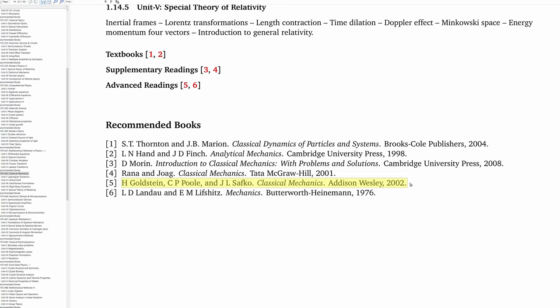Start reading Thornton and Marion. Once you are comfortable with concepts and the basics, you can then open the Goldstein book. The third book is also a very good book written with considerable explanation, easily approachable for new master's students, whereas the Goldstein book is a little difficult and requires more experience in mechanics. So start with book one or book three, then move to book five, the Goldstein book.